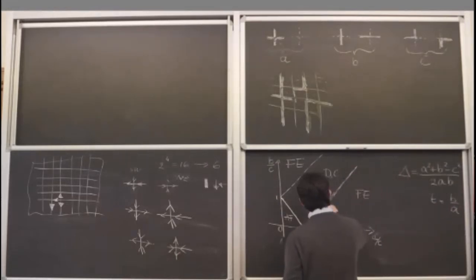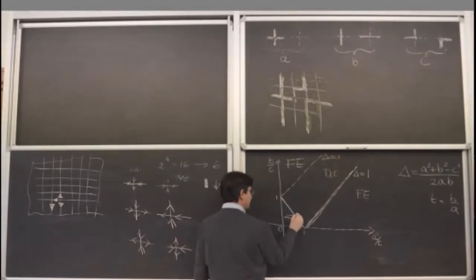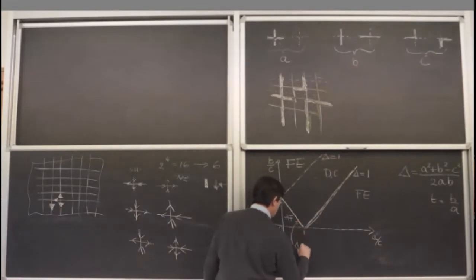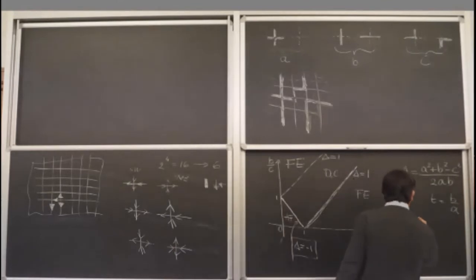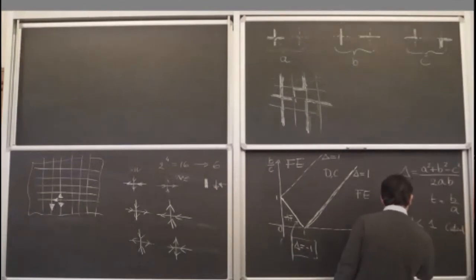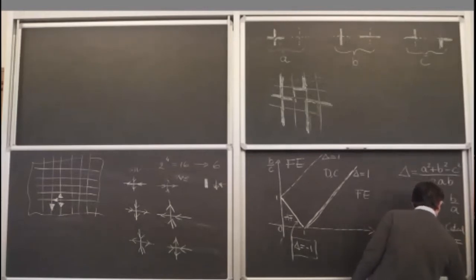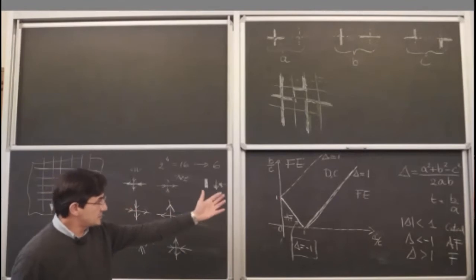The line delta equal one separates the ferroelectric and critical regions. The line delta equal minus one separates the critical and antiferroelectric regions. In terms of delta, you have three regions. When you move in the phase diagram, delta increases in the direction from the antiferroelectric corner toward the ferroelectric region.